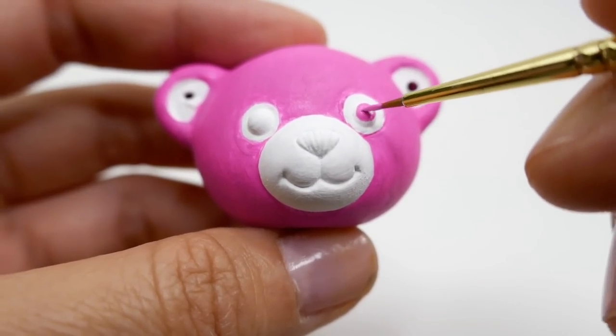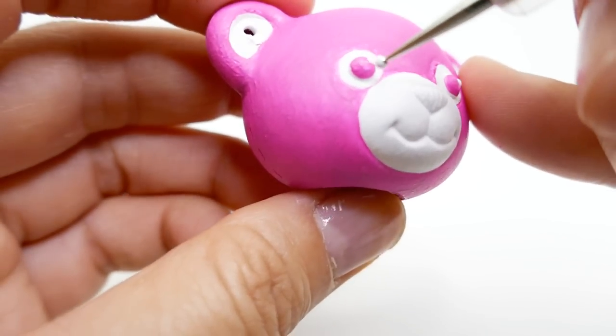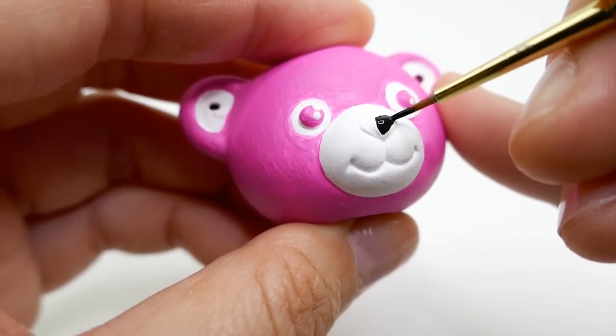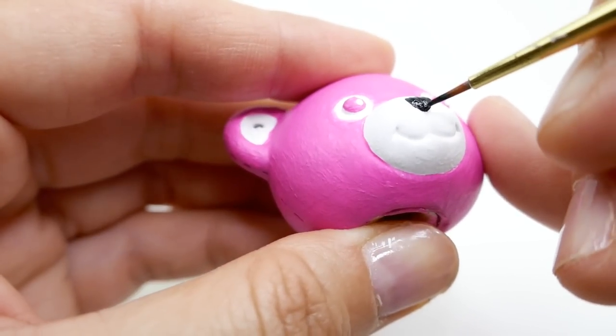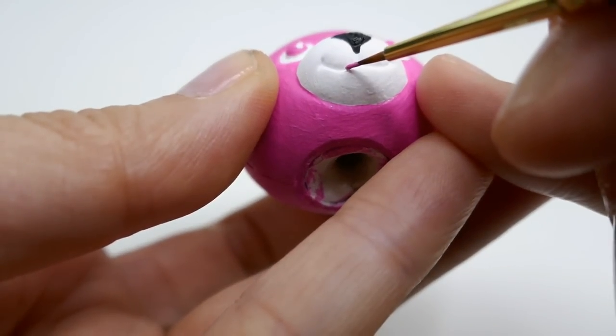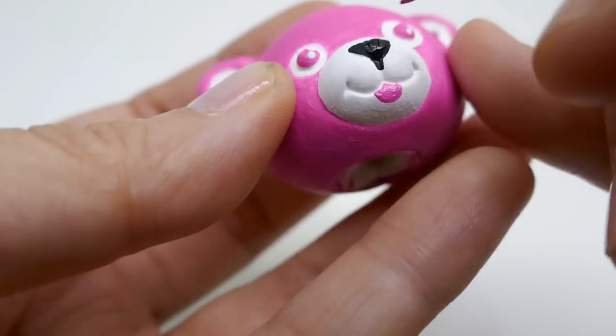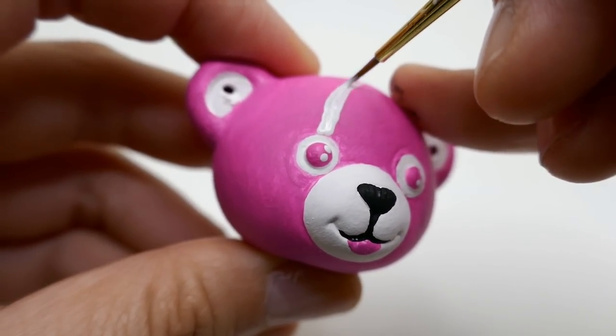Using pink, we're going to paint the pupils and then add two small white dots. Now for the nose, we're going to paint it black and add a little pink mouth. Finally, on top of the head, we're going to paint a white tear above the eyes.